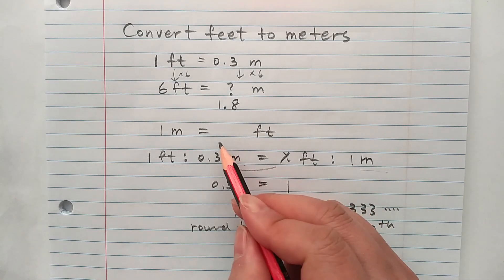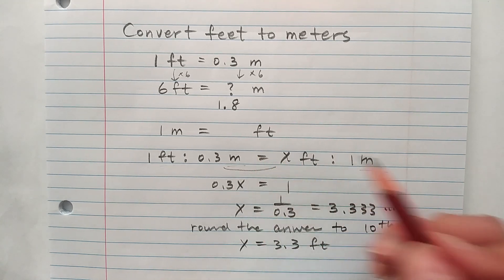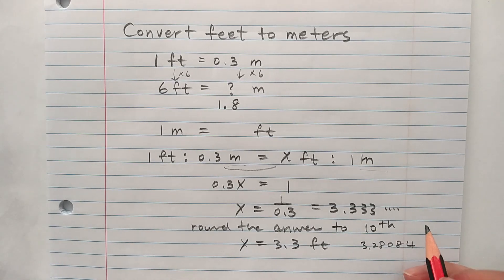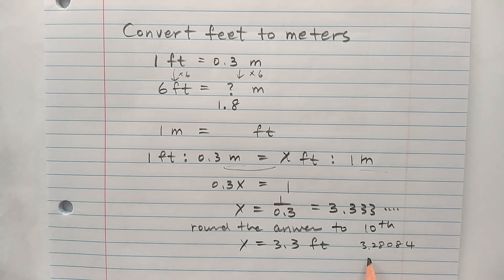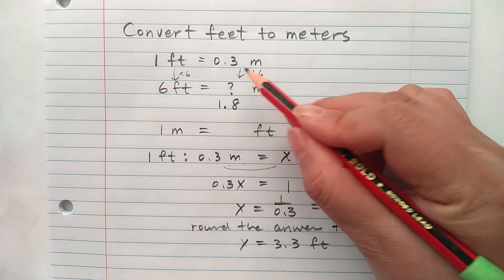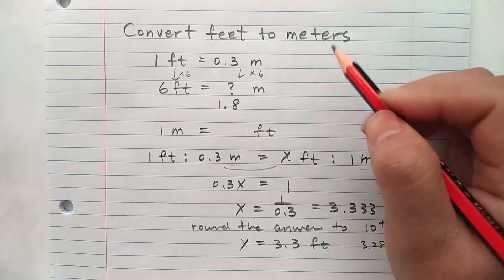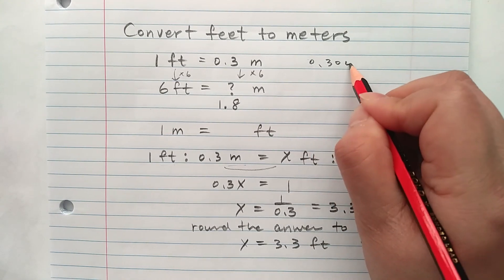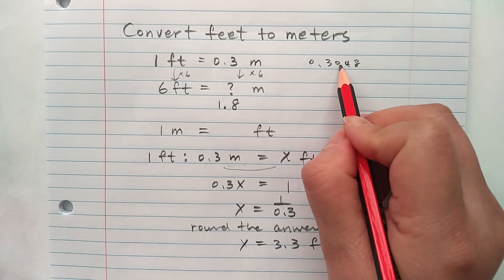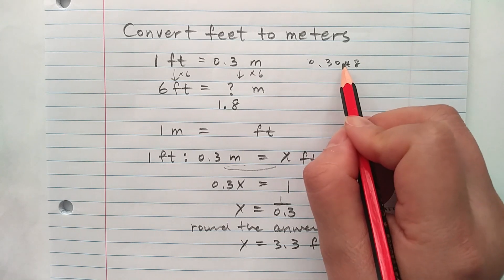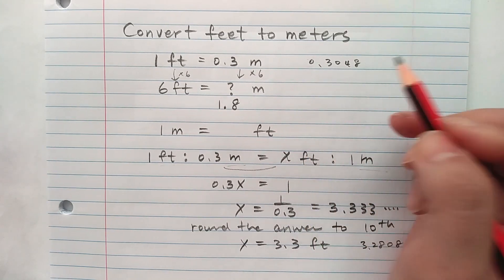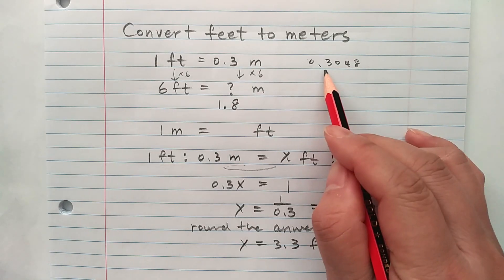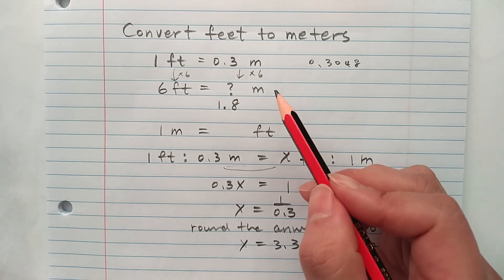If you put 1 meter in the conversion calculator, it'll give you 3.28084. Then why did we get 3.3? It's because we use 0.3. If you put 1 foot in the conversion calculator to meters, it'll give you 0.3048. We ignore these small numbers and round it to 0.3. So this is just a rounding error. Instead of 0.3048, we'll just use whatever we're given with.